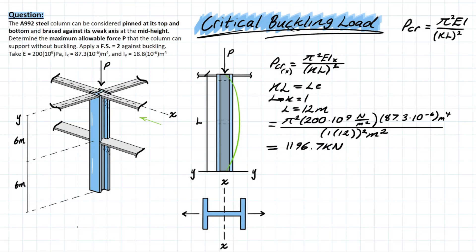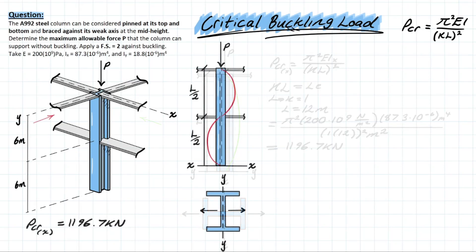I'm going to bring this value over here and save it for later. Now let's take a look at what the buckling is going to look like about the y-y axis. Now we're looking down the barrel of this y-axis, seeing the front of the flange of the column and these lateral braces.